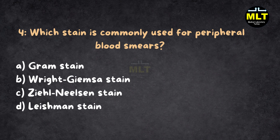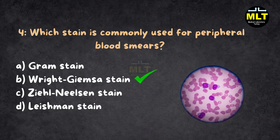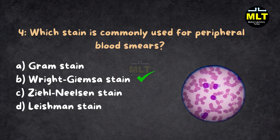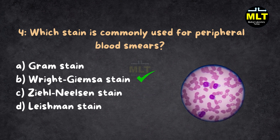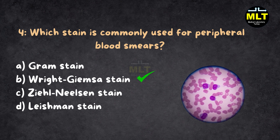Correct answer: B. Wright-Giemsa stain. Explanation: The Wright-Giemsa stain is the gold standard for examining blood smears under a microscope. It allows differentiation of white blood cells and identification of abnormal RBC morphology.